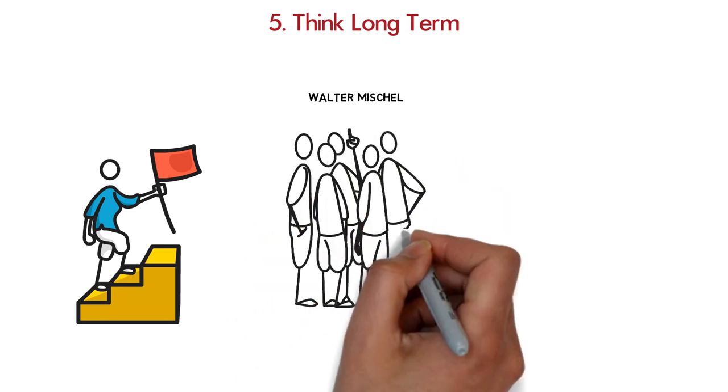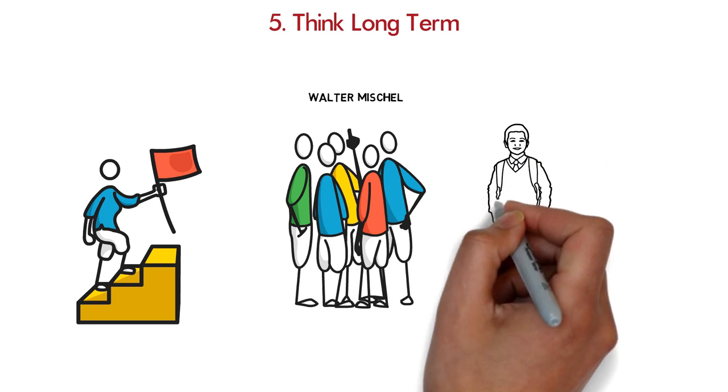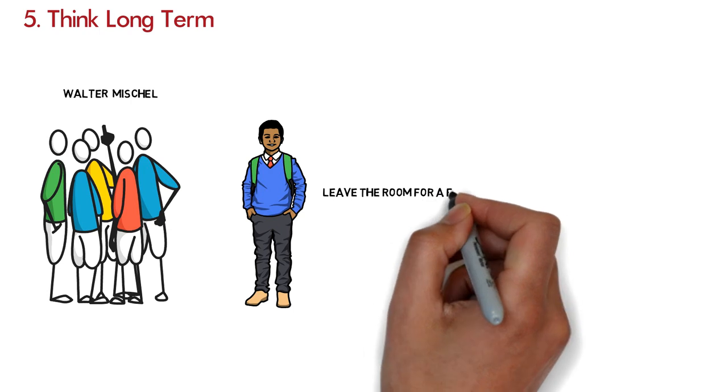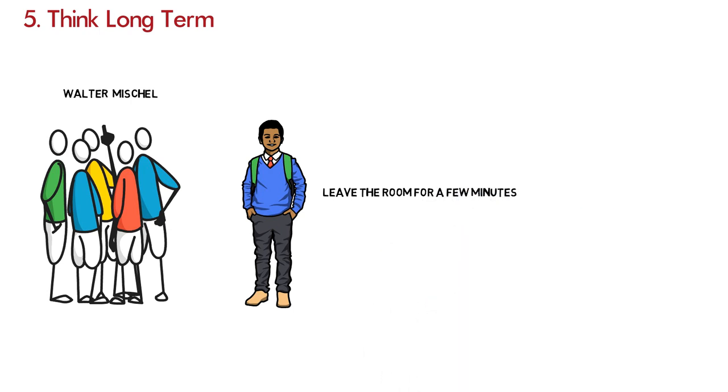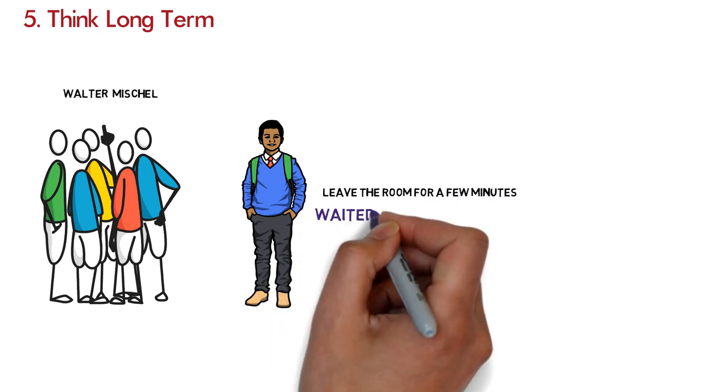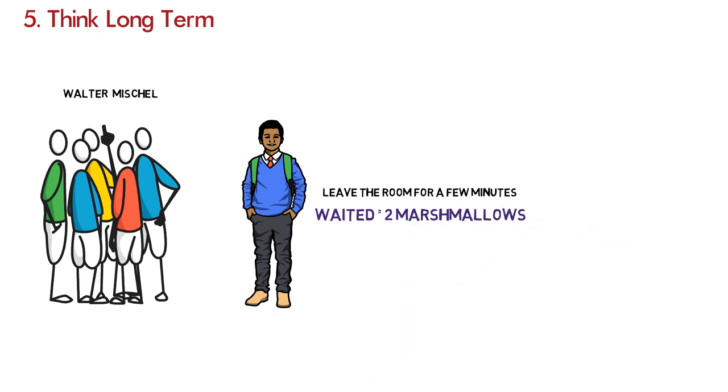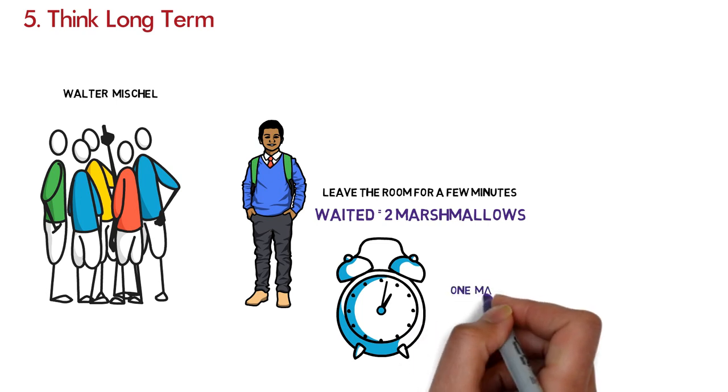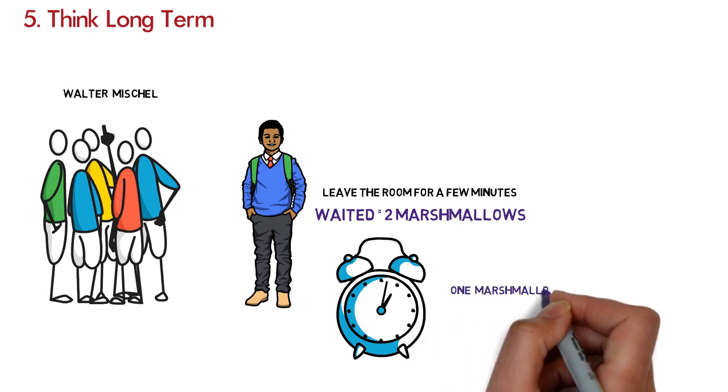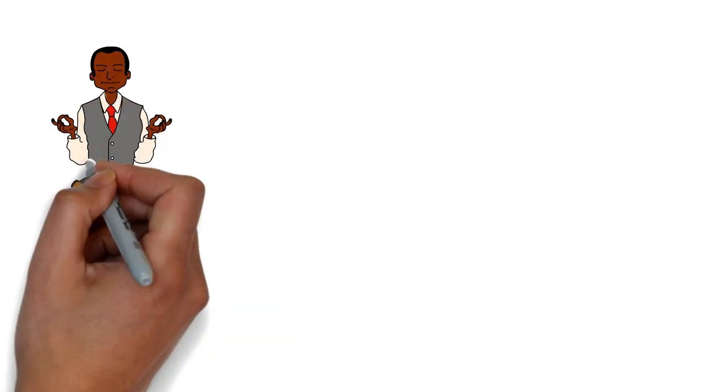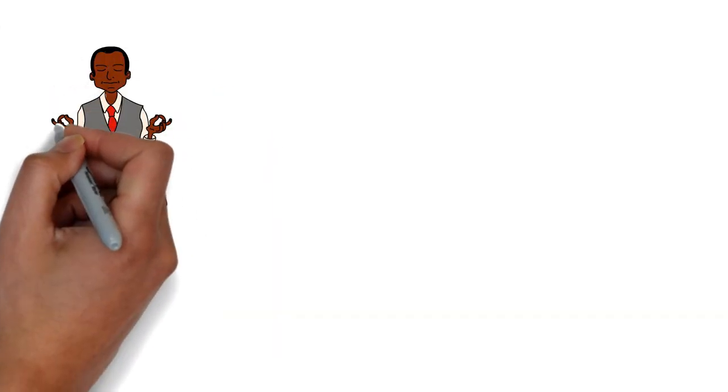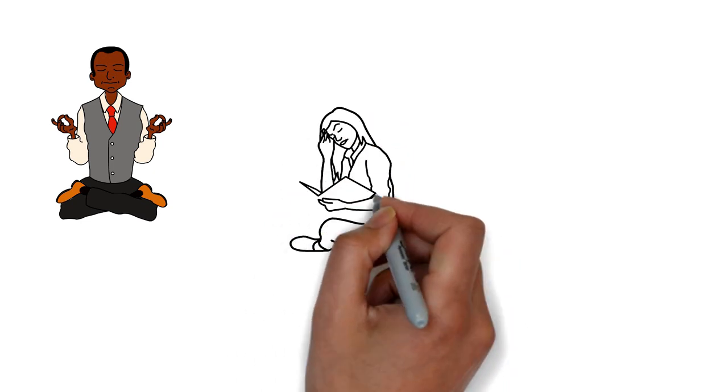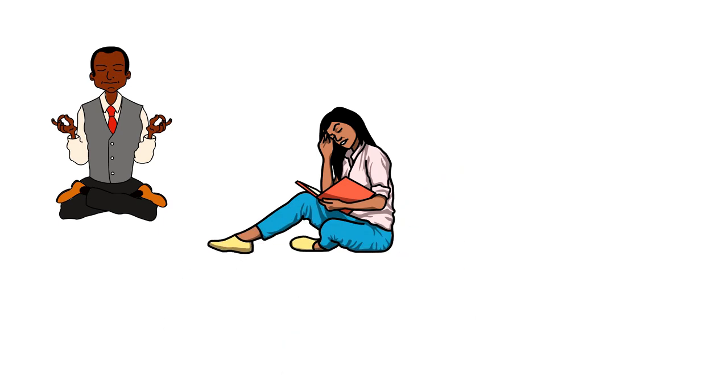Mischel and his colleagues presented a preschooler with a plate of marshmallows. The child was then told that the researcher had to leave the room for a few minutes, but not before giving the child a simple choice. If the child waited until the researcher returned, she could have two marshmallows. If the child simply couldn't wait, she could ring a bell and the researcher would come back immediately, but she would only be allowed one marshmallow. When these same children grew older, their self-control remained and they were more likely to score higher on the college entrance SAT test, were better able to handle stress and concentrate without becoming distracted.